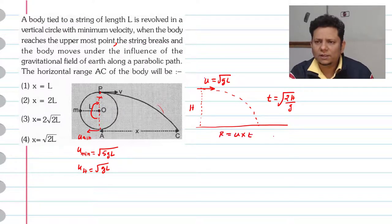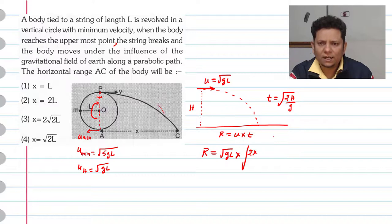We can calculate the time t value. So the range R can be written as u, which is under root gL, multiplied by time t. Here we need to write t as root of twice h divided by g. Now if this value is L, then h will be equal to 2L.